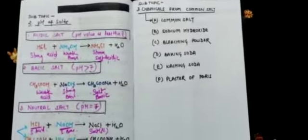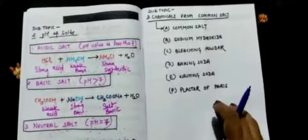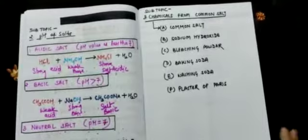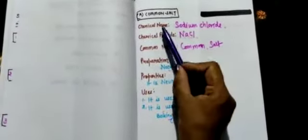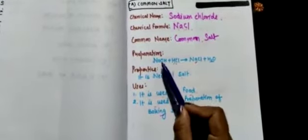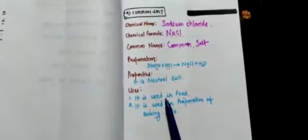Subtopic 3 is Chemicals from Common Salt — there are six chemicals we will deal with one by one. The first is common salt. Its common name is common salt, chemical formula is NaCl (sodium chloride). Preparation involves a strong base and strong acid combining to form salt and water, making it a neutral salt. It is used in food and also in the preparation of baking soda.